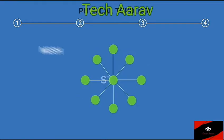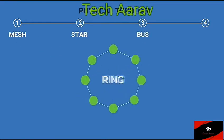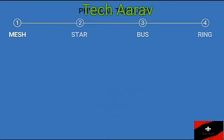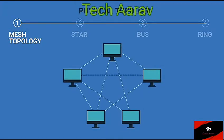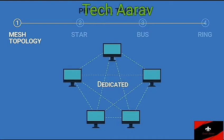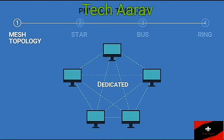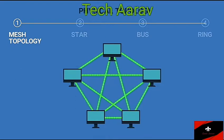Mesh, star, bus, and ring. In mesh topology, every device has a dedicated point-to-point link to every other device. The term dedicated means the link carries traffic only between the two devices it connects.